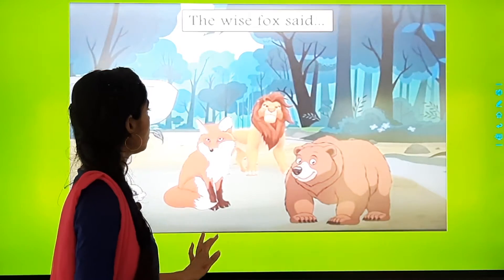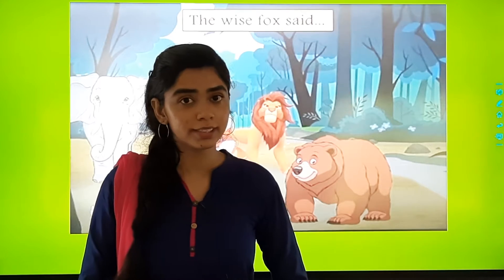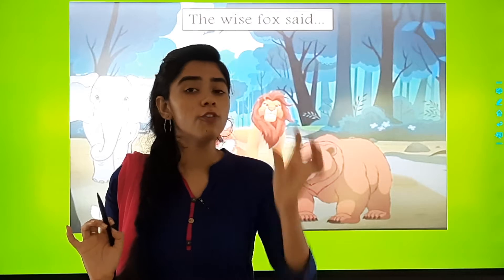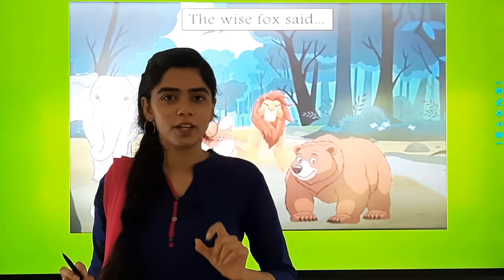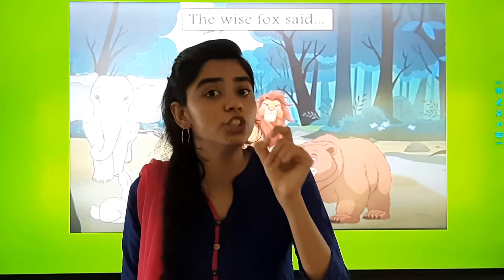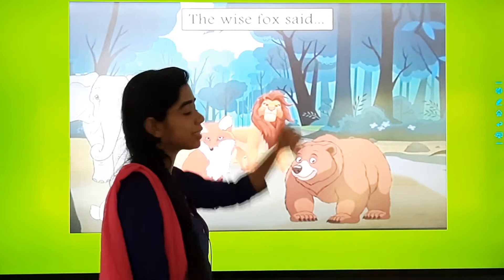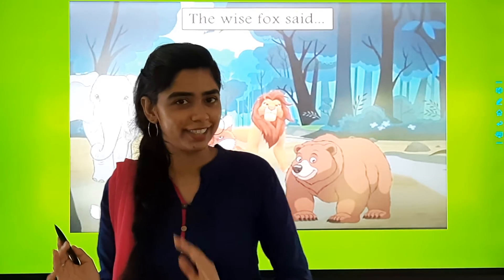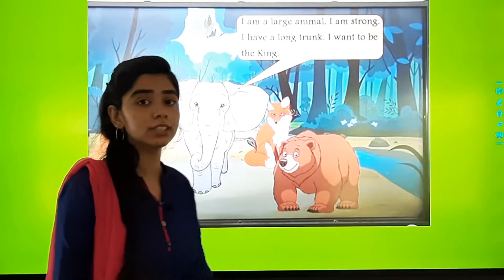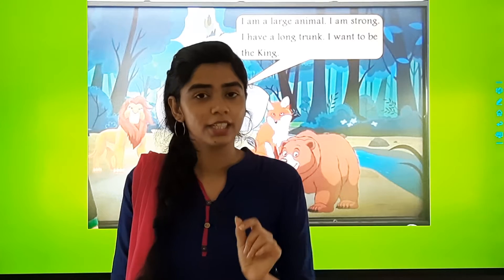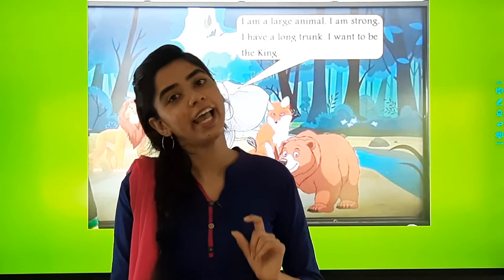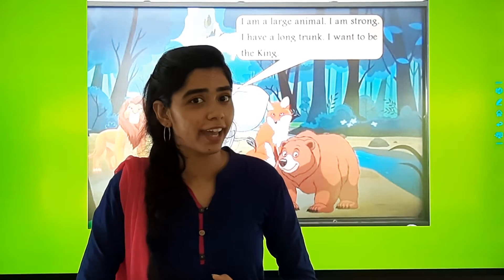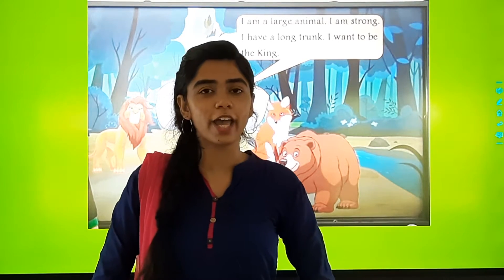Now in this story, what did we see? We saw that there were animals and the qualities were described. First was the wise fox. Now fox is an animal, so fox is a noun. But what word is used to describe fox? The word wise is used to describe fox. Now in the same way, for the elephant, which word is used? I am a large animal. So large word is used to describe elephant, and I am strong. So elephant is strong. Strong word is used to describe elephant.